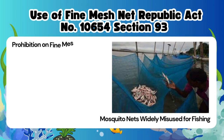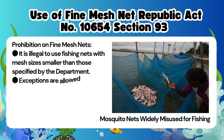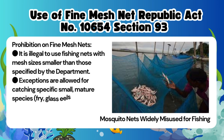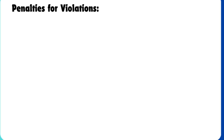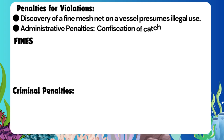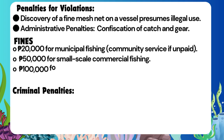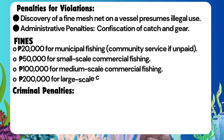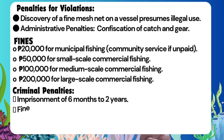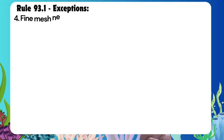Use of Fine Mesh Net — Republic Act No. 10654, Section 93 — Prohibition on Fine Mesh Nets: It is illegal to use fishing nets with mesh sizes smaller than those specified by the department. Exceptions are allowed for catching specific small mature species, fry, glass eels, elvers, tabios, and alamong. Penalties: Discovery of a fine mesh net on a vessel presumes illegal use. Administrative penalties include confiscation of catch and gear, fines of 20,000 Philippine Pesos for municipal fishing (community service if unpaid), 50,000 for small-scale commercial fishing, 100,000 for medium-scale, and 200,000 for large-scale commercial fishing. Criminal penalties include imprisonment of six months to two years and fines twice the administrative amount.